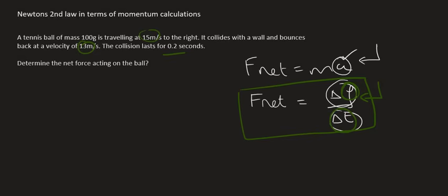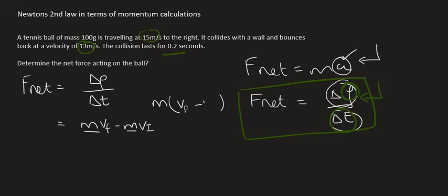So we know that F net is equal to change in momentum over change in time. Now we know that change in momentum is equal to mass times velocity final minus mass times velocity initial. By the way there is another way to write that if you want. Because the mass is constant in both you could say mass and then you could just say bracket VF minus VI.